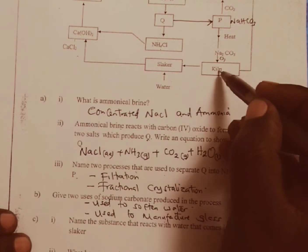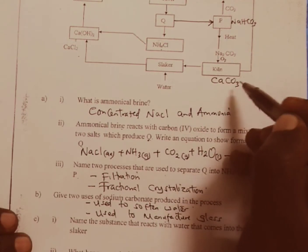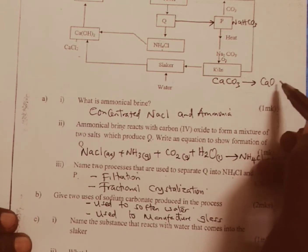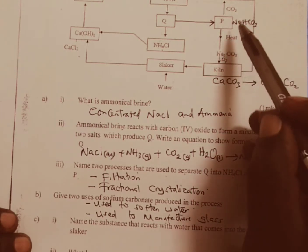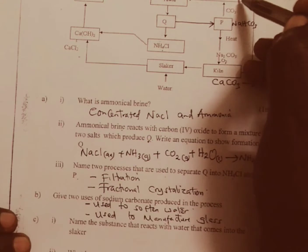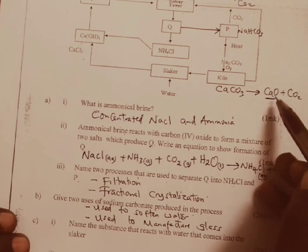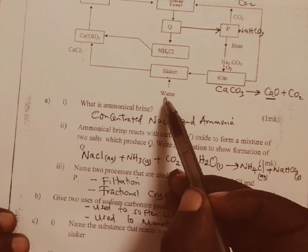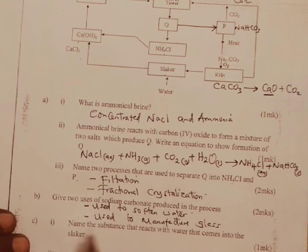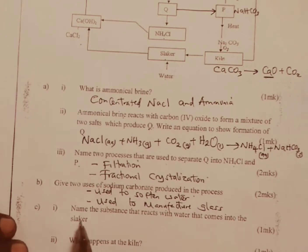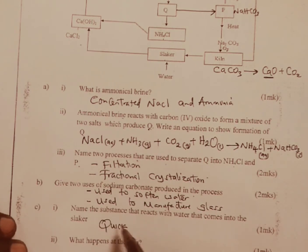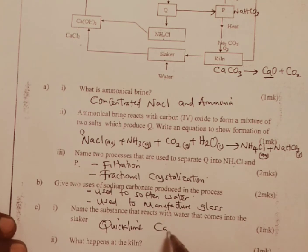Name the substance that reacts with water that comes into the slaker. In the kiln, calcium carbonate decomposes into calcium oxide and carbon dioxide. The carbon dioxide moves up to the Solvay tower, and calcium oxide gets into the slaker where it reacts with water to form slaked lime, or simply calcium hydroxide. The answer is quicklime, or simply calcium oxide.